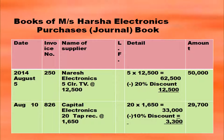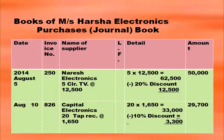Next date August 10th, invoice number 826, name of the supplier Capital Electronics. 20 tape recorders at rupees 1,650 will be written in the name of the supplier column. Then the calculation in the details column: 20 × 1,650 = 33,000. Trade discount of 10 percent: 33,000 × 10/100 = 3,300. So 33,000 minus 3,300 gives 29,700.